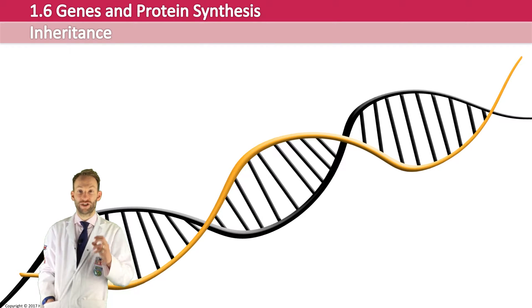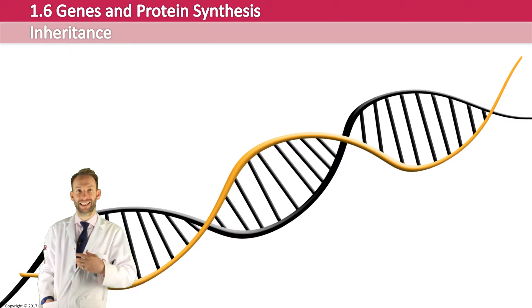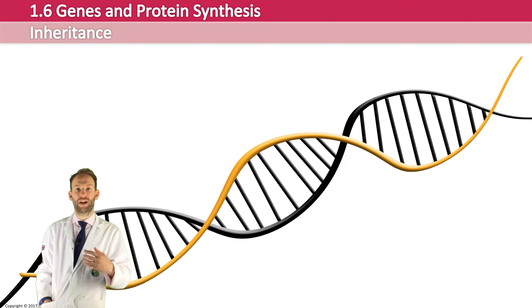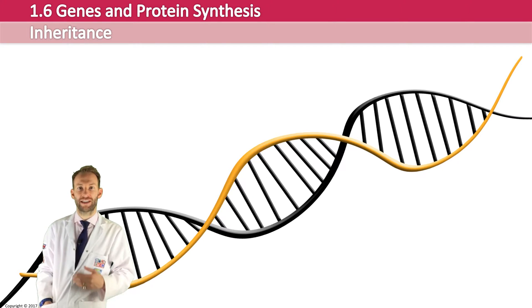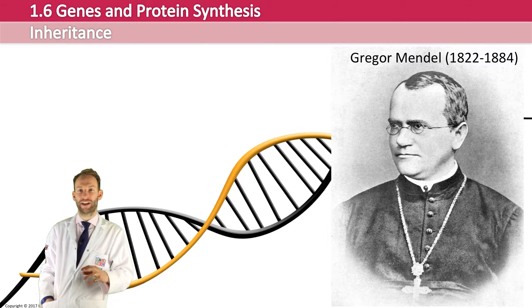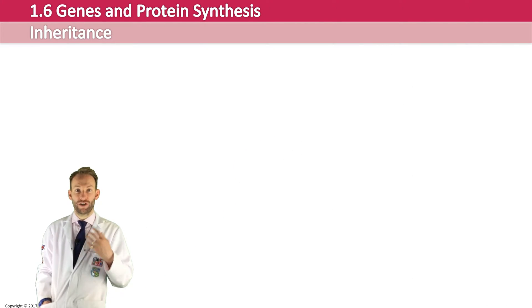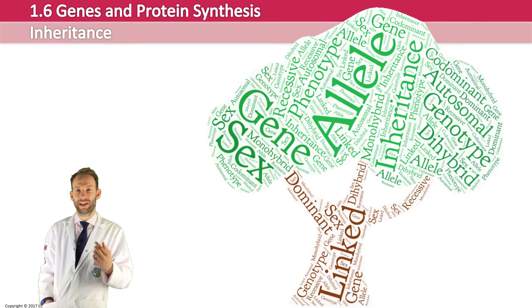You've already studied the structure and function of DNA, and we've talked about protein synthesis and how DNA works. Now we're going to look at Mendelian genetics — inheritance. It's called Mendelian genetics because it's named after Gregor Mendel, the monk-turned-scientist who pioneered this entire area of biology. With inheritance, a lot of it has to do with vocabulary — you need all the key terms in order to interpret questions and explain your answers fully.